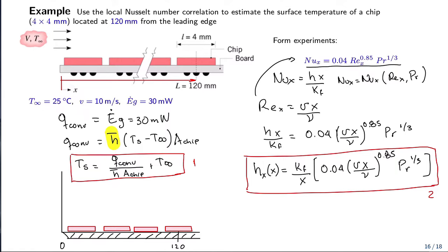Let's plot the local heat transfer coefficient as a function of X. At the leading edge it is very large — probably much steeper than shown — and it decreases along the board. We are interested in this particular chip, and the reason we want to compute its temperature is to ensure it does not exceed some maximum value; otherwise the chip will burn.